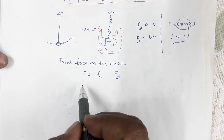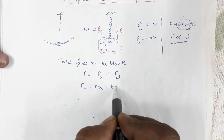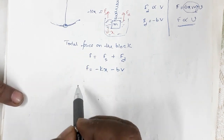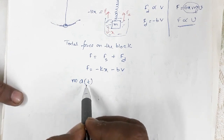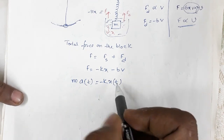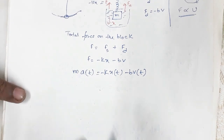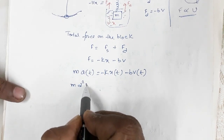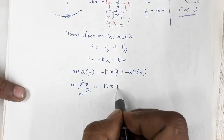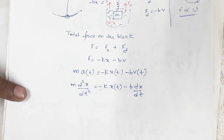So the total force F = −kx − bv. Applying Newton's second law, F = ma, we get: m·a(t) = −kx(t) − b·v(t). Writing this in differential form: m·d²x/dt² = −kx(t) − b·dx/dt.